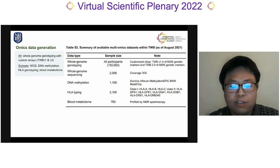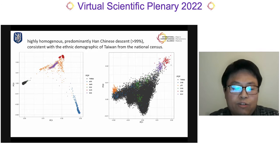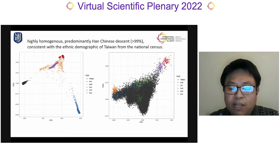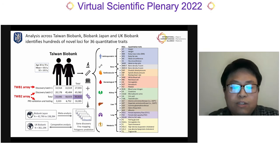Multi-omics data were generated for all or subsets of participants, including genome-wide SNP genotyping, whole genome sequencing, HLA typing, DNA methylation, and blood metabolome. The population structure of TWB is highly homogeneous, comprising Taiwanese individuals of predominantly Han-Chinese descent. Projection of TWB onto 1,000 Genomes data showed tight clustering with the EAS superpopulation, and among the East Asian samples, TWB subjects clustered with the two Han-Chinese populations, CHB and CHS. The main results I'll report are findings from around 100,000 individuals across 36 human quantitative traits in the Taiwan Biobank.